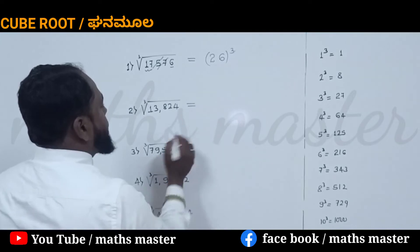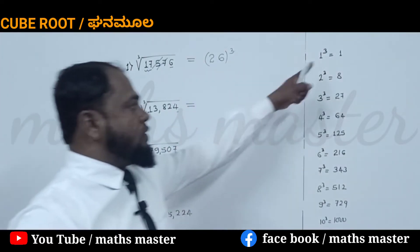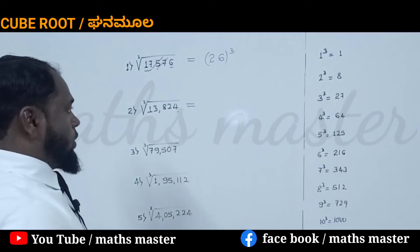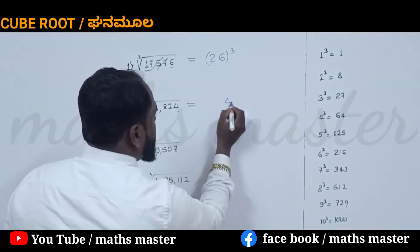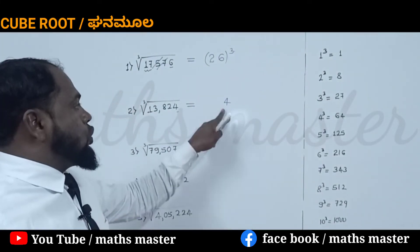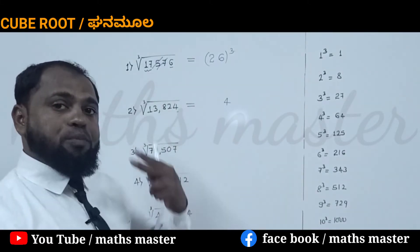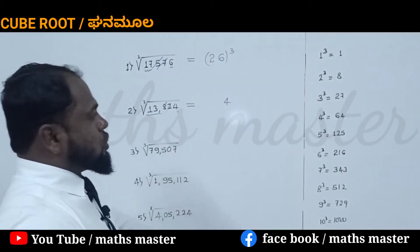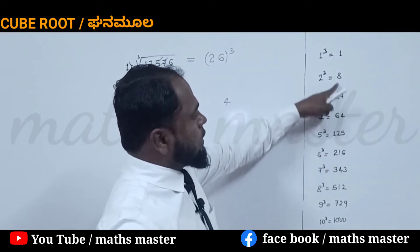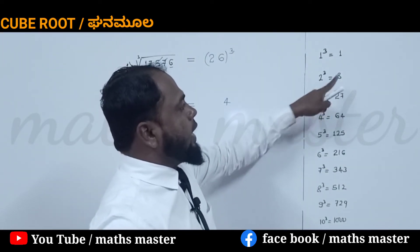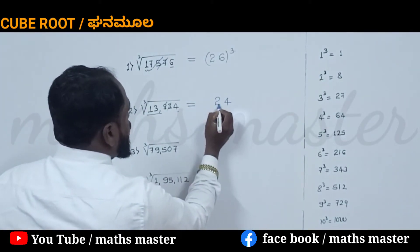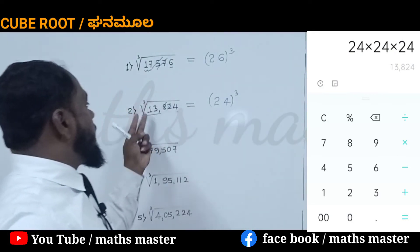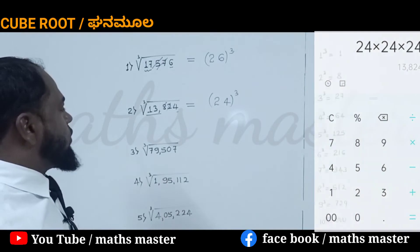Let us come to one more example. In unit place is 4. 4 cubed is 64, so the cube root will have 4 in unit place. Skip 2 digits, leaving 13. The nearest cube less than 13 is 8, which is 2 cubed. So it is a cube of 24. If you multiply 24 × 24 × 24, you will get 13824. Same procedure we are going to apply.